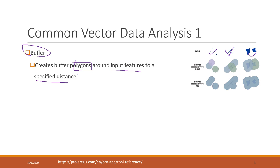You have to specify the distance, like 5 kilometers, 10 miles, etc. For the output, you can choose whether or not you want to dissolve the output. If you don't want to dissolve the output, then for each single input it has its own unique buffer, so those buffers will be separate.